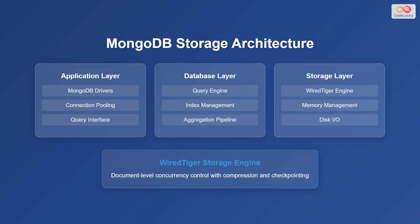The database layer features a query engine, index management, and an aggregation pipeline, which handles query execution, indexing, and complex data processing. Finally, the storage layer uses the WiredTiger engine to manage memory and disk input-output operations, providing document-level concurrency control with compression and checkpointing. WiredTiger is MongoDB's default storage engine.